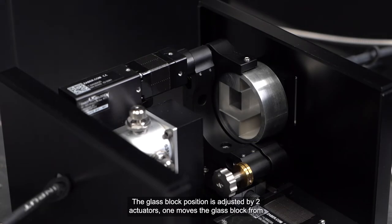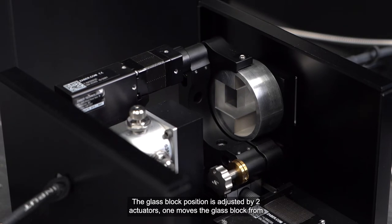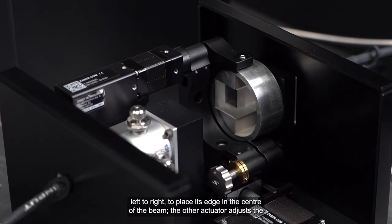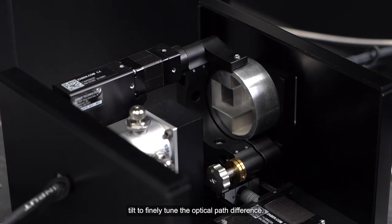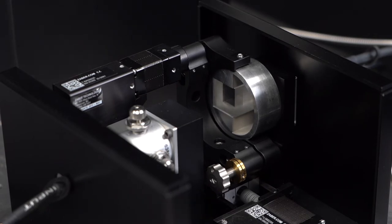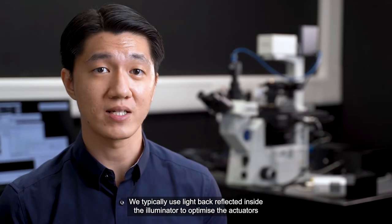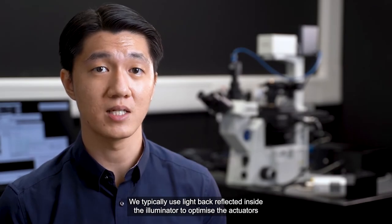The glass block position is adjusted by two actuators. One moves the glass block from left to right to place its edge in the center of the beam. The other actuator adjusts the tilt to finely tune the optical path difference. We typically use light back-reflected inside the illuminator to optimize the actuator positions.